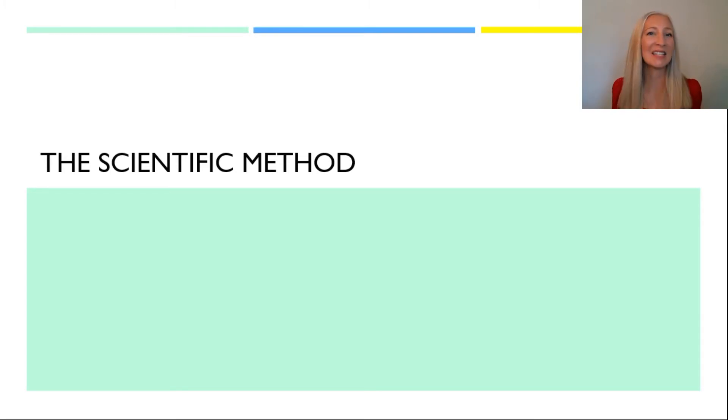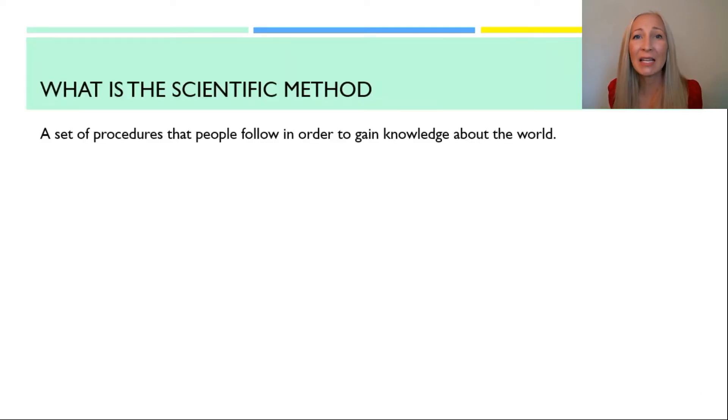So, what is the scientific method? Well, it's just a set of procedures that people follow in order to gain knowledge about the world around them and to use that knowledge to solve future problems. One thing about the scientific method is that every textbook you open and every scientist you ask is going to give you a slightly different set of rules or set of procedures.